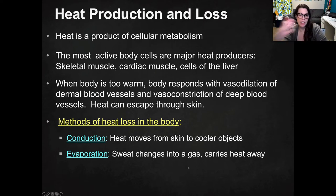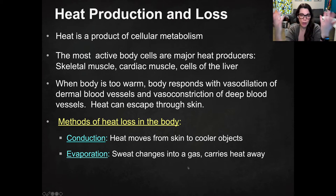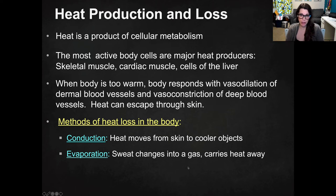Let's talk about heat production and loss in general, and then specifically how that happens in the body. Heat is a product of cellular metabolism. If you touch your face, it's warm because you maintain a constant internal body temperature through cellular metabolism. You breathe oxygen and consume glucose, your mitochondria do cellular respiration, and that converts sugar into ATP — which is energy — but not all of the energy is converted into usable ATP. Some is lost as heat, which is just the laws of thermodynamics, and our bodies use that heat to maintain normal body temperature.